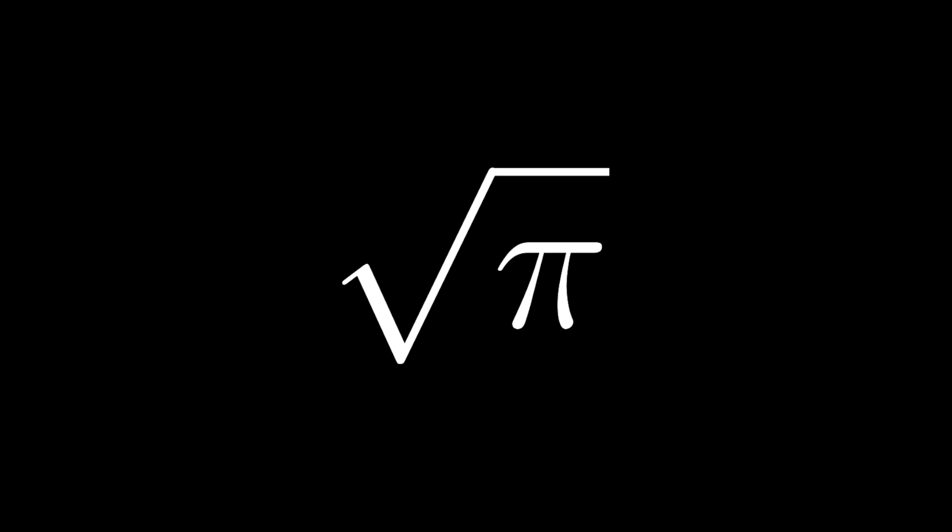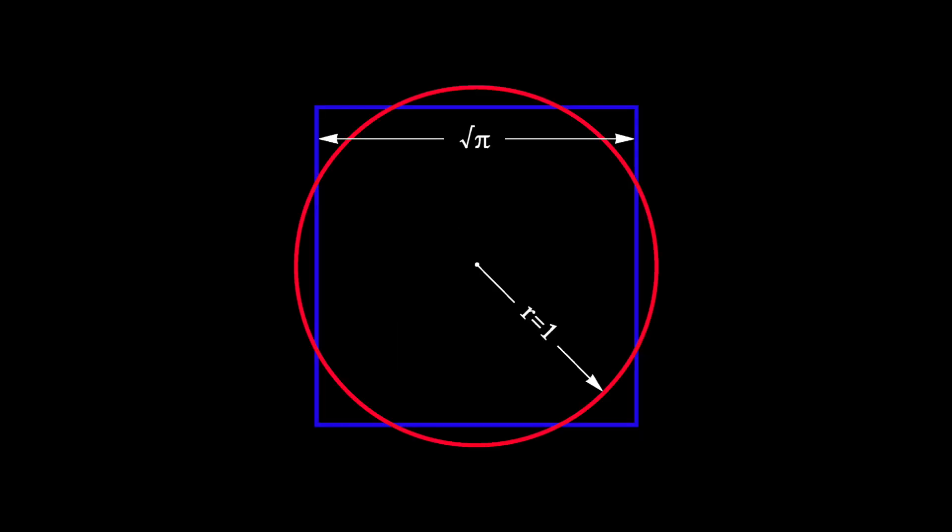Unlike the square root of 2, the square root of Pi is transcendental and cannot be expressed algebraically. Thus, such a square cannot be constructed. But it certainly hasn't stopped people from trying.